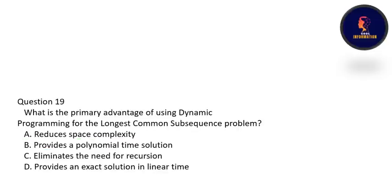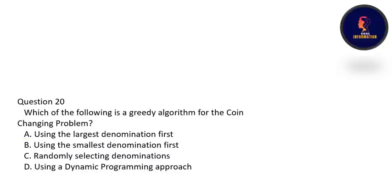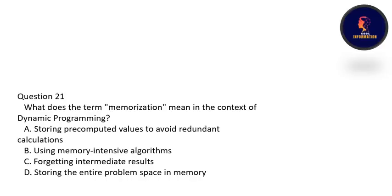What is the primary advantage of using DP for the longest common subsequence problem? Using DP provides a polynomial time solution — option B is correct. Which of the following is a greedy algorithm for the coin changing problem? The correct option is A — using the largest denomination first. What does the term memoization mean in dynamic programming? Memoization means storing pre-computed values to avoid redundant computation — option A is correct.